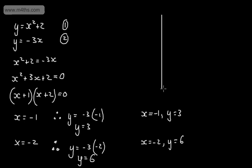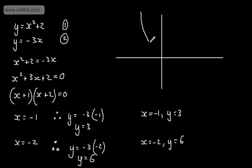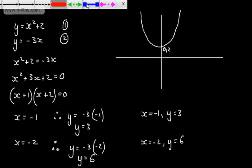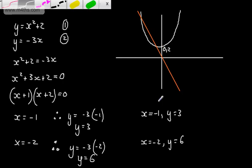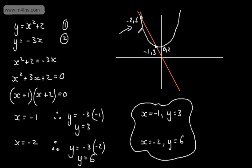We have a quadratic equation and a linear equation. The quadratic y equals x squared plus 2 is a parabola, symmetric about the y-axis, with the vertex at (0, 2) — the graph has been lifted up by two units. The linear equation y equals minus 3x is a straight line through the origin with a gradient of minus 3. The solutions are the points of intersection: (−2, 6) and (−1, 3). That's a nice example of solving simultaneous equations where one is linear and one is non-linear.